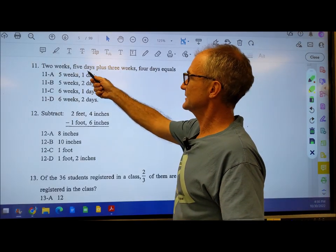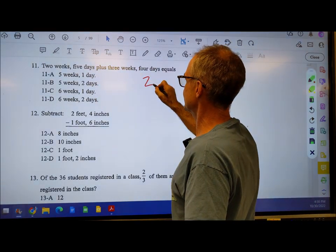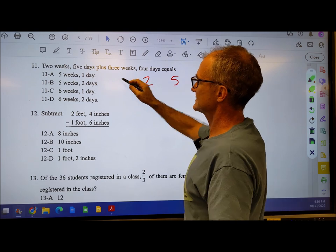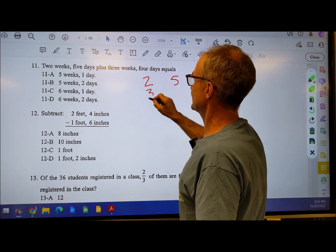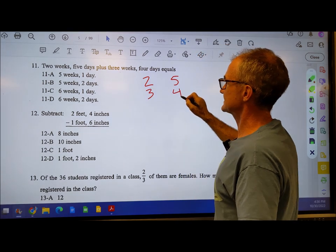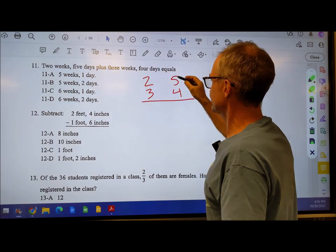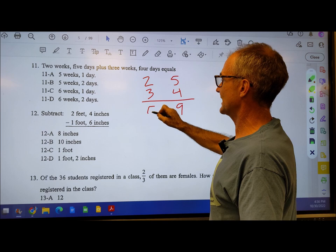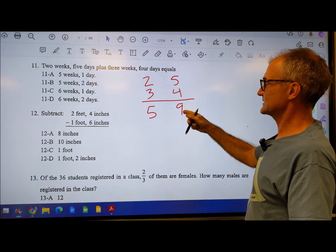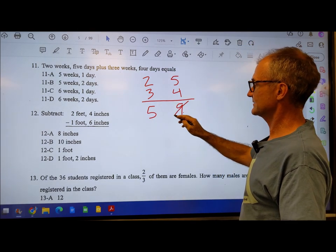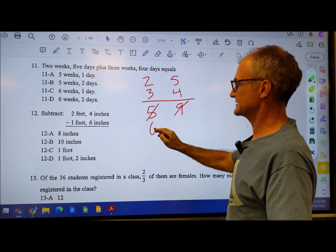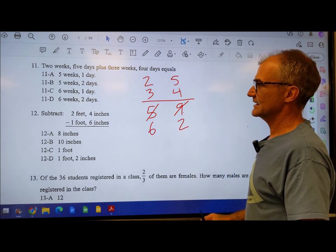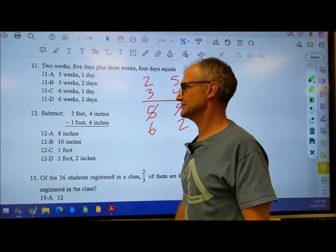We have two weeks, five days plus three weeks, four days. What's that equal to? 5 and 4 is 9, and 2 and 3 is 5. Seven days to the week, so I'm going to take seven out of here and put it in here to give me six weeks, two days. The correct answer is six weeks, two days.